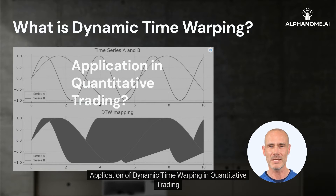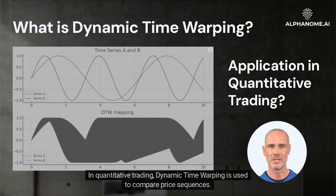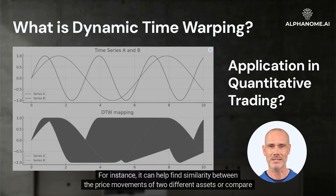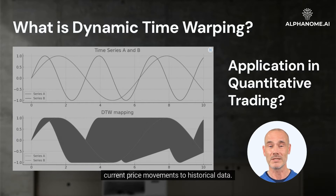In Quantitative Trading, Dynamic Time Warping is used to compare price sequences. For instance, it can help find similarity between the price movements of two different assets, or compare current price movements to historical data.